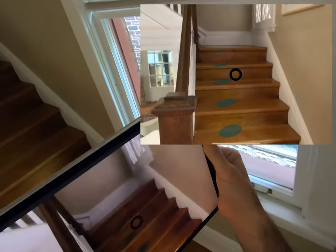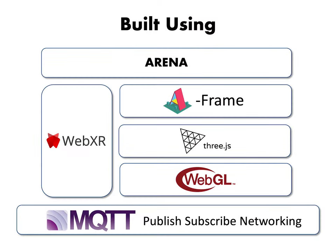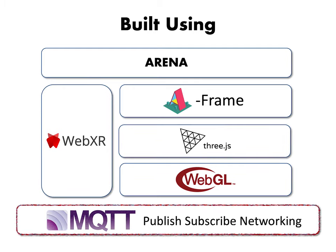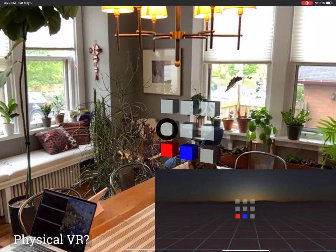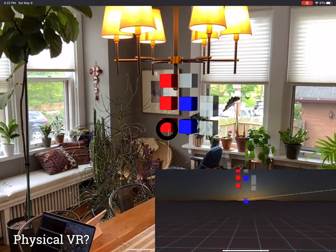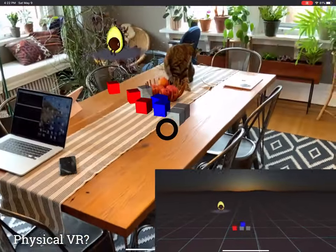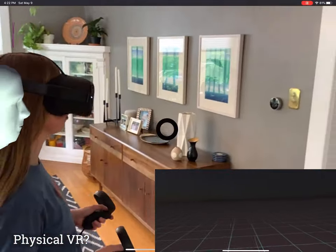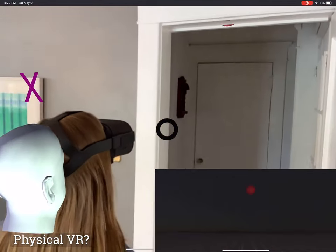ARENA was built using web technologies including A-Frame, WebXR, and Three.js. It uses the MQTT PubSub system for its underlying messaging. These same web technologies can be versatile in VR as well, hinted at in this example.